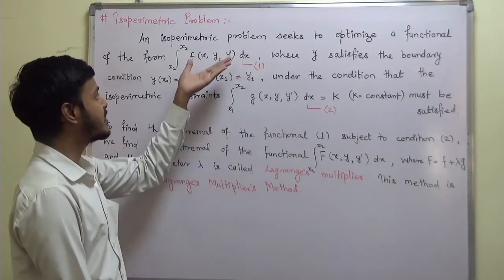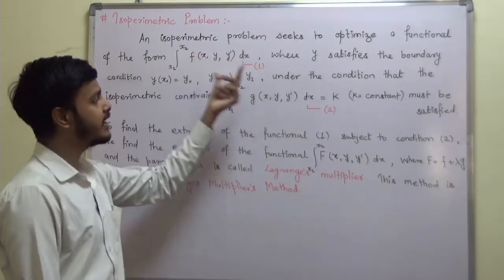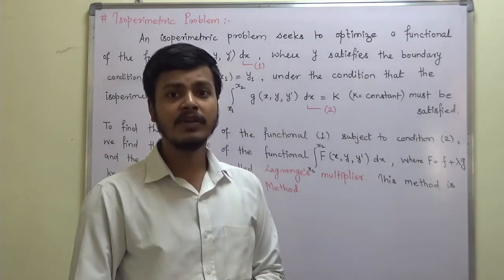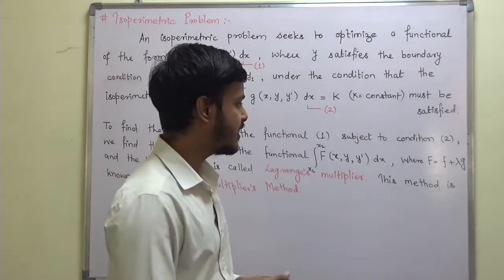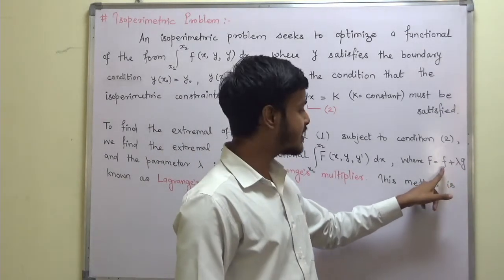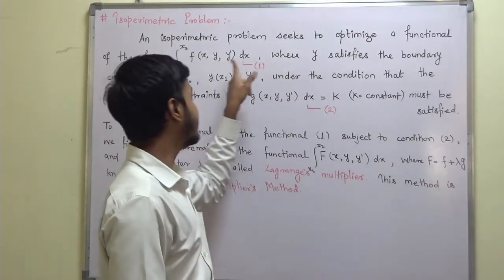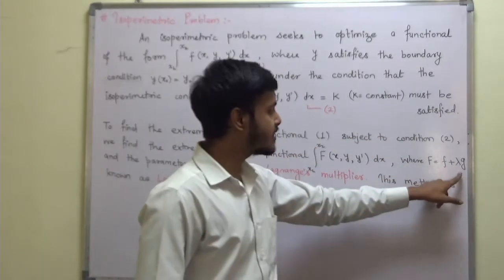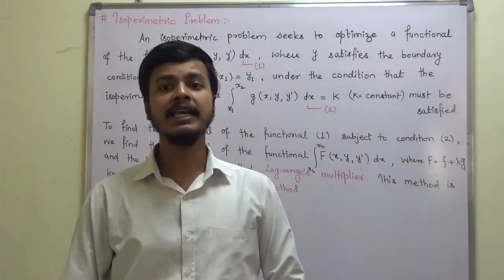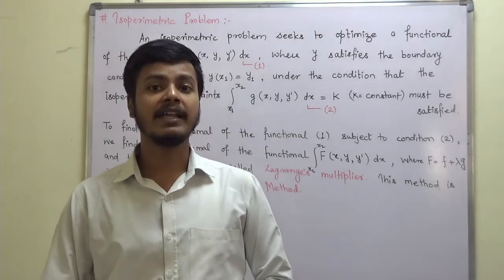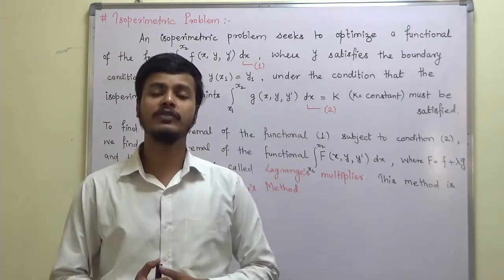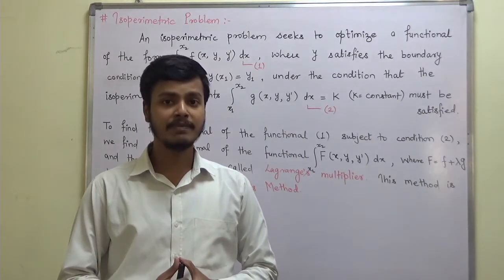In order to get the extremal of this functional subject to the constraint, we are going to formulate a new functional: capital F is equal to f plus lambda times g, where f is the original functional in equation one, g is in equation two, and lambda is the Lagrange multiplier. The method we are adopting to gain the solution is known as the Lagrange multiplier method.